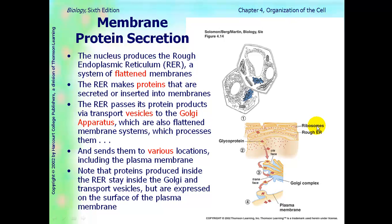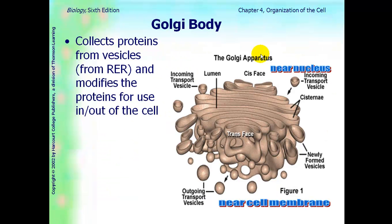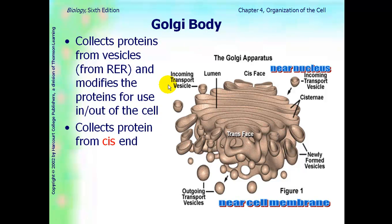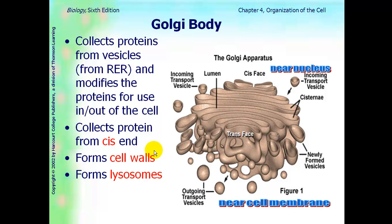The trans part of the Golgi complex is closest to the plasma membrane. The Golgi body — also called Golgi apparatus or Golgi complex, all the same thing — collects proteins from the vesicles that came from the RER and modifies these proteins for use in and out of the cell. They collect proteins from the cis end. They also form cell walls and they also form lysosomes.